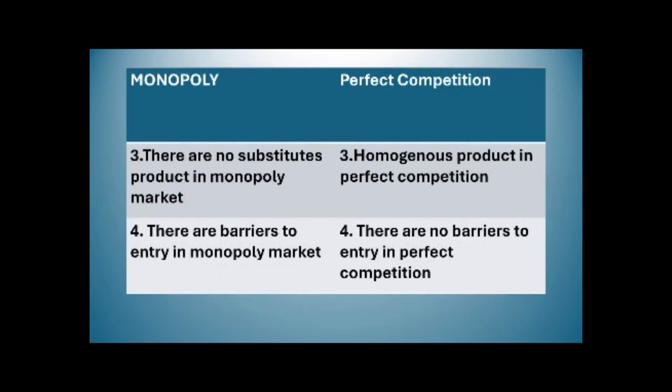There are no substitute products in a monopoly market, whereas in perfect competition products are homogenous. In a monopoly market there are barriers to entry, while in perfect competition there are no barriers to entry.